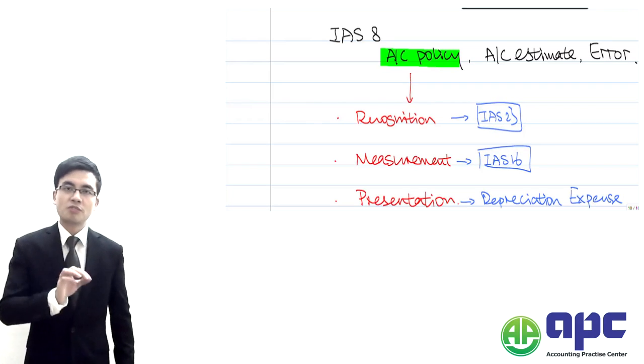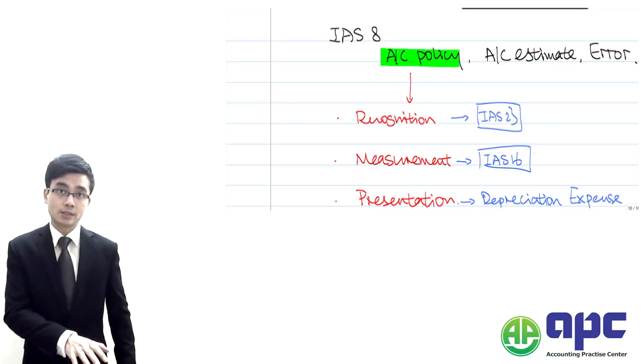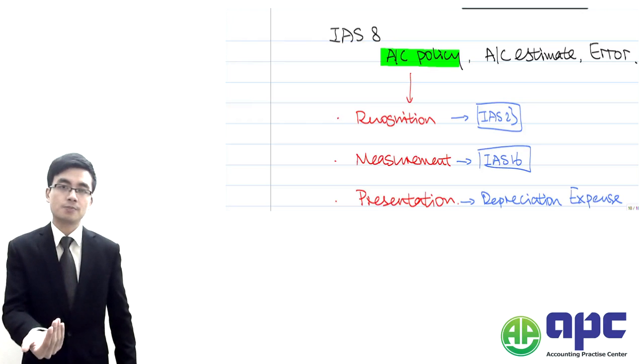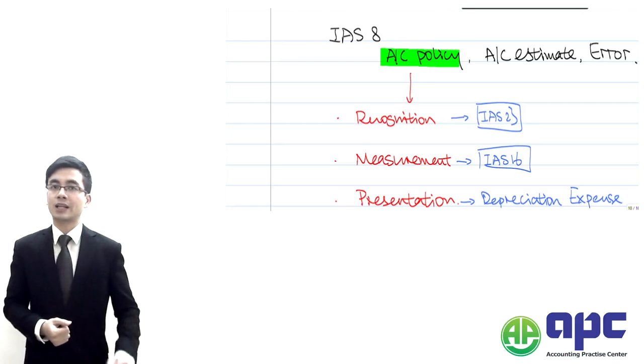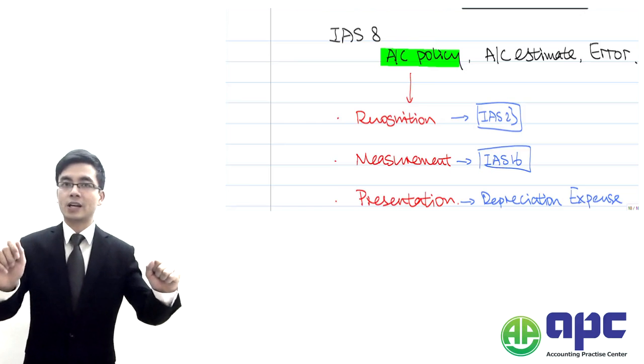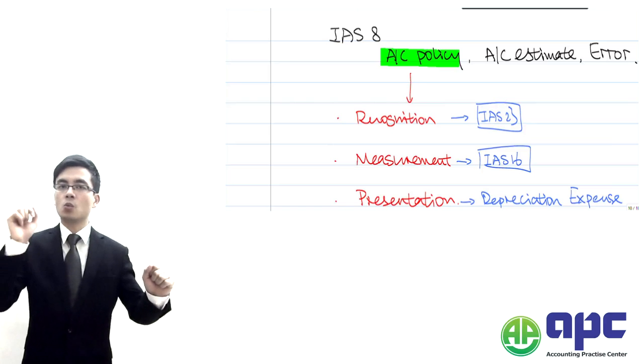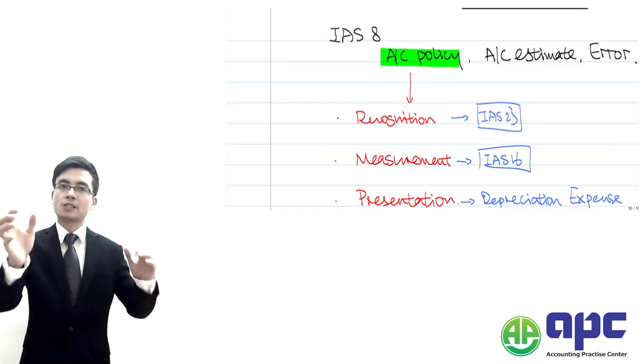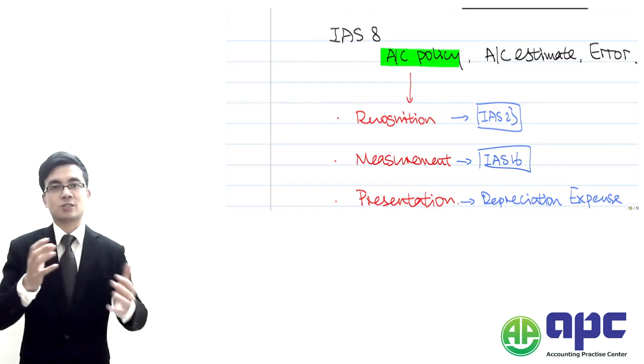For example, within the oil industry we talk about measurement. For IAS number 2 inventory, when measuring the cost of inventory we can either use FIFO or weighted average cost. But for oil industries we tend to use weighted average cost because each unit of oil cannot be easily separated from each other.